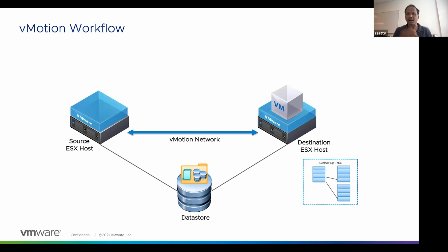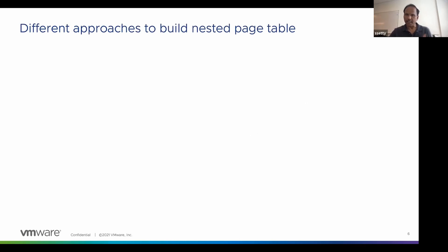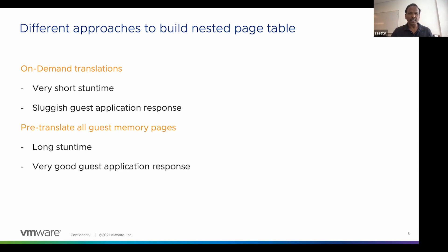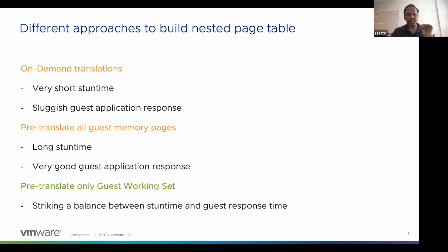There are different ways to build this nested page table on the destination host. One approach is on-demand translation — whenever the guest touches a page, create an entry. That keeps stun time very short but the guest is very sluggish. Another choice is to pre-translate and build the entire nested page table on the destination before the VM resumes — that gives good response times but significantly extends the downtime, which is also not acceptable. So the approach we took was to find the best of both worlds.